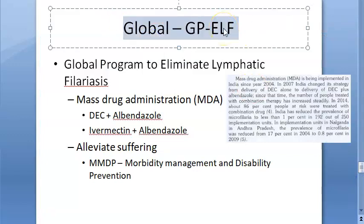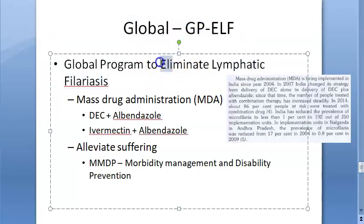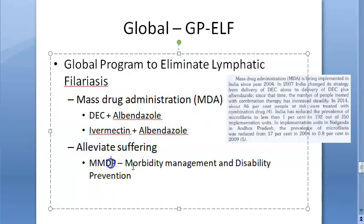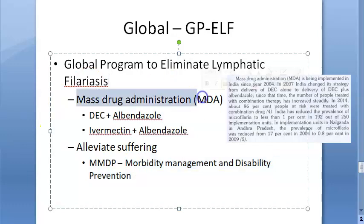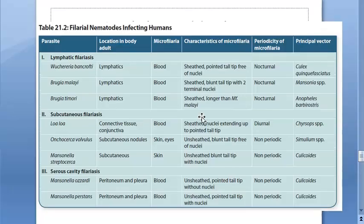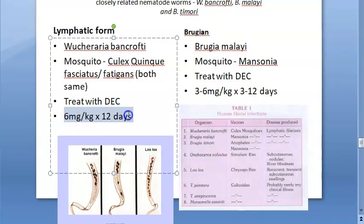Under the Global Program for Elimination of Lymphatic Filariasis, mass drug administration (MDA) is carried out. DEC is given with albendazole, or ivermectin and albendazole in combination, to alleviate suffering through morbidity management and disability prevention. DEC is given to almost everyone in the community regardless of disease manifestation, except those under two years of age, pregnant women, or the seriously ill. The dose is 6 mg/kg body weight, combined with albendazole and ivermectin.